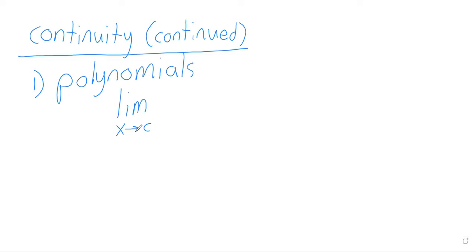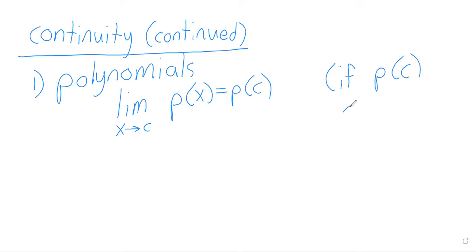Being continuous at a point means the limit as x approaches c of the function can be gotten just by plugging c in for x. This is continuity at a point; we're talking about continuity on domains here. This statement is true assuming that c is in the domain of the polynomial. All polynomials have all the real numbers as their domain, so that's not an issue. Every polynomial is continuous at every point.